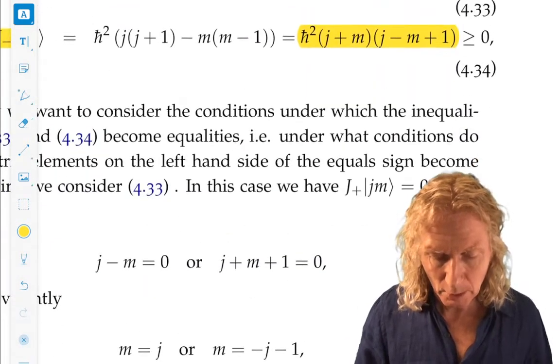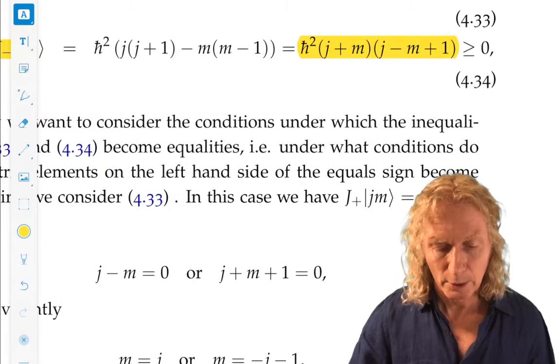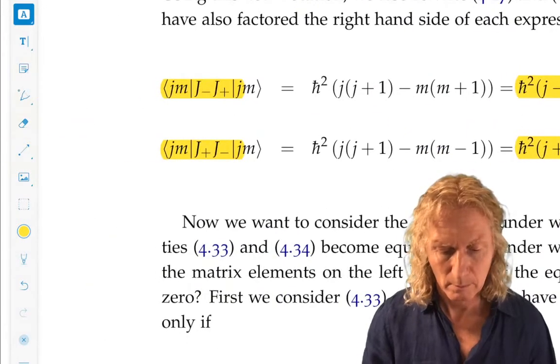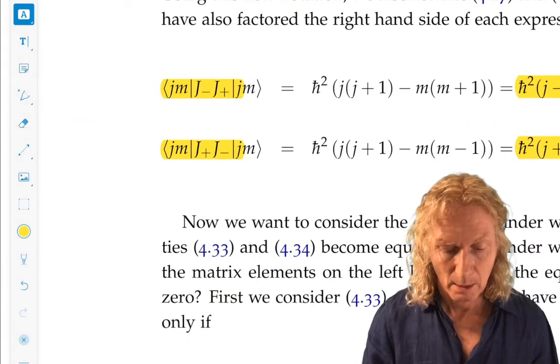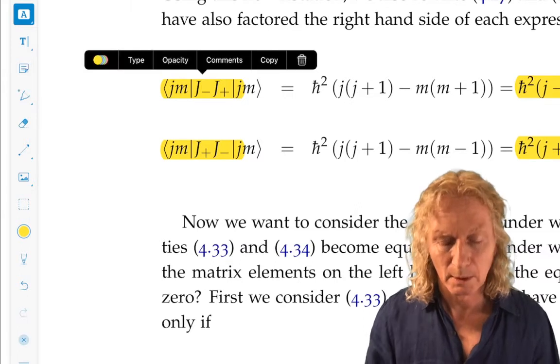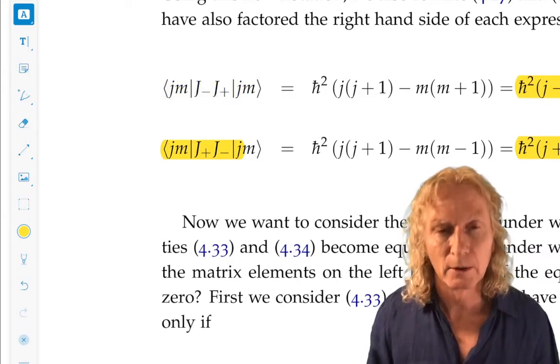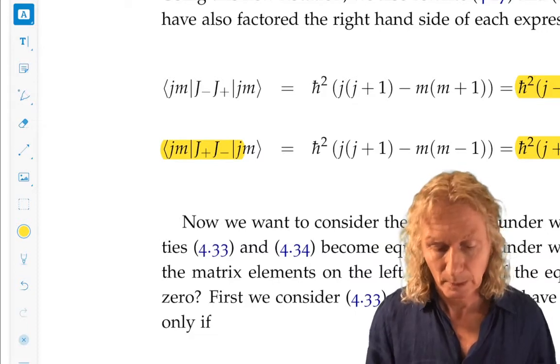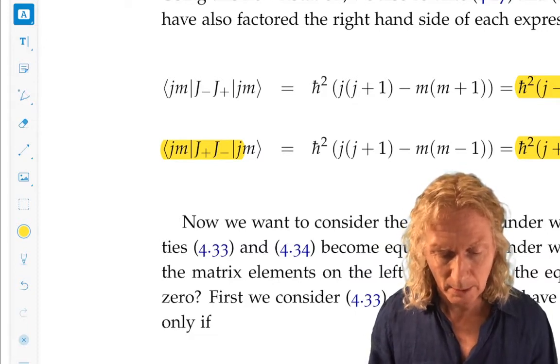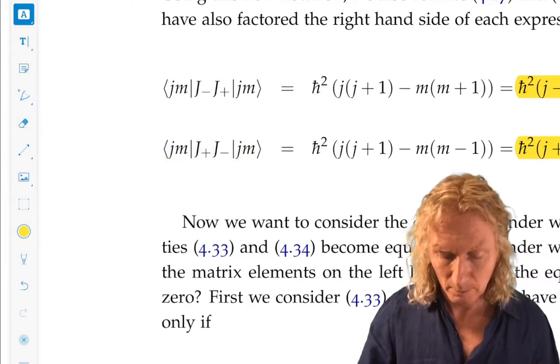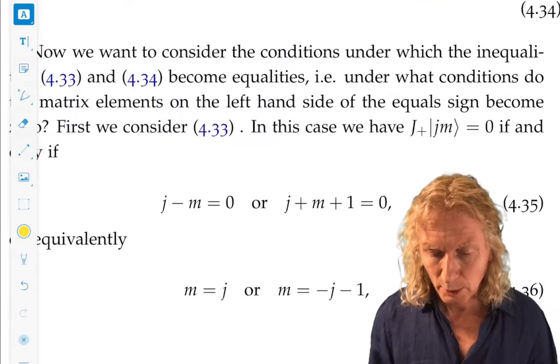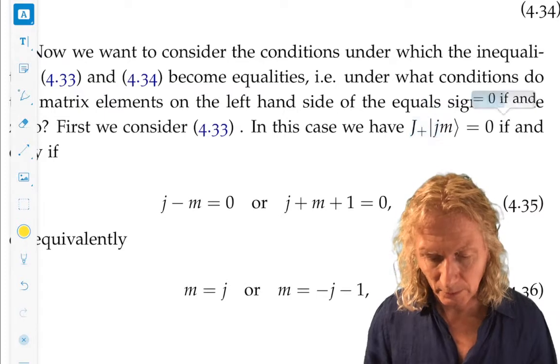What we're going to look at are the situations where the extreme is satisfied. J plus acting on ket J, M is 0, and at the other end, J minus acting on ket J, M is 0. So, let's look at J plus acting on ket J, M when it's 0.